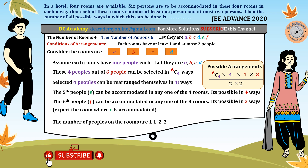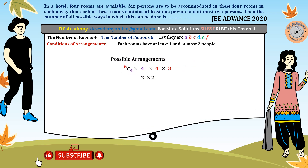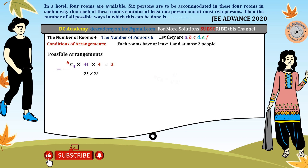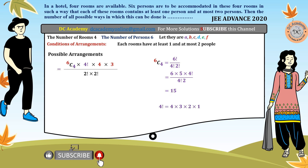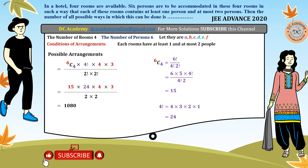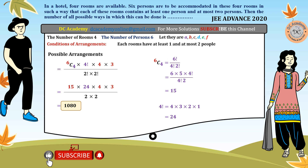Now for the final calculation: 6C4 = 6!/(4! × 2!) = (6 × 5)/2 = 15. And 4! = 24. So the total number of arrangements is 15 × 24 × 4 × 3 divided by (2! × 2!) = 15 × 24 × 3 = 1080. Therefore the total number of ways that six persons can be accommodated in the four hotel rooms is 1080. There are other methods to solve this problem which we can explore later.